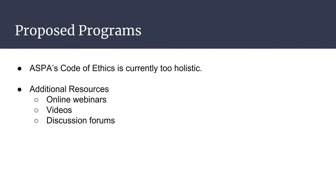We also want to mention that we feel the ASPA Code of Ethics is currently too holistic — a little too broad and general — and we believe it could be more individualized. In this ethics course, we learned that ethics training is about controlling the mind, but the individual must learn to control their own mind and create the habits they wish to have. We believe that self-development programs, such as online webinars, videos, and discussion forums, will provide ASPA members the necessary resources to more effectively stimulate their own ethical mindset.